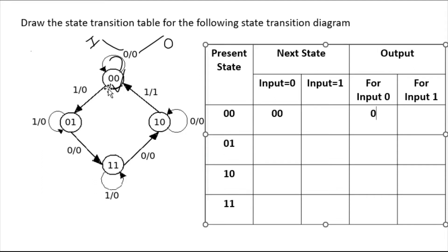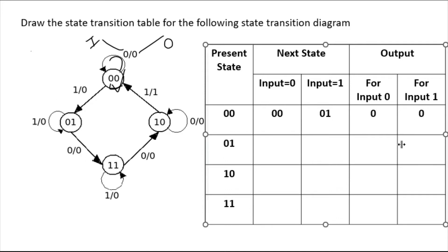Now come to this second arrow: one-by-zero. The input value is one, so it is reaching to the next state zero-one. The output is zero, so when your input is one the output is zero.